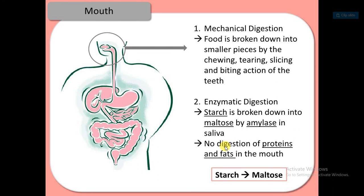Enzymatic digestion in the mouth involves starch being broken down into maltose by the amylase in the saliva. There is no digestion of proteins and fats in the mouth — only starch is converted into maltose.